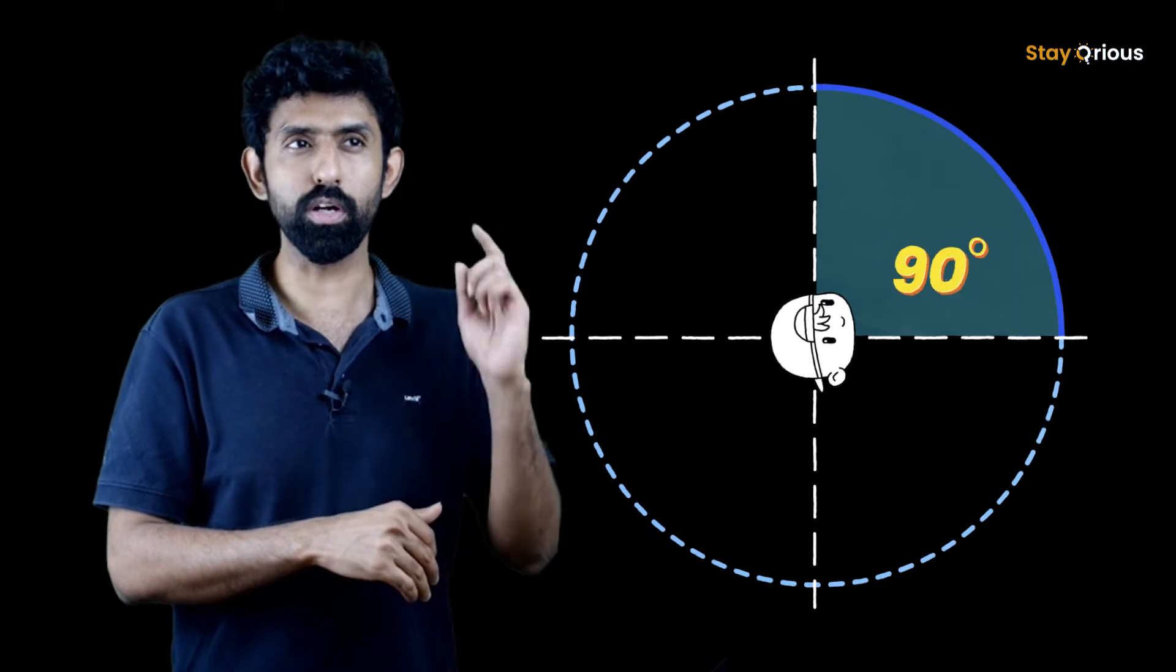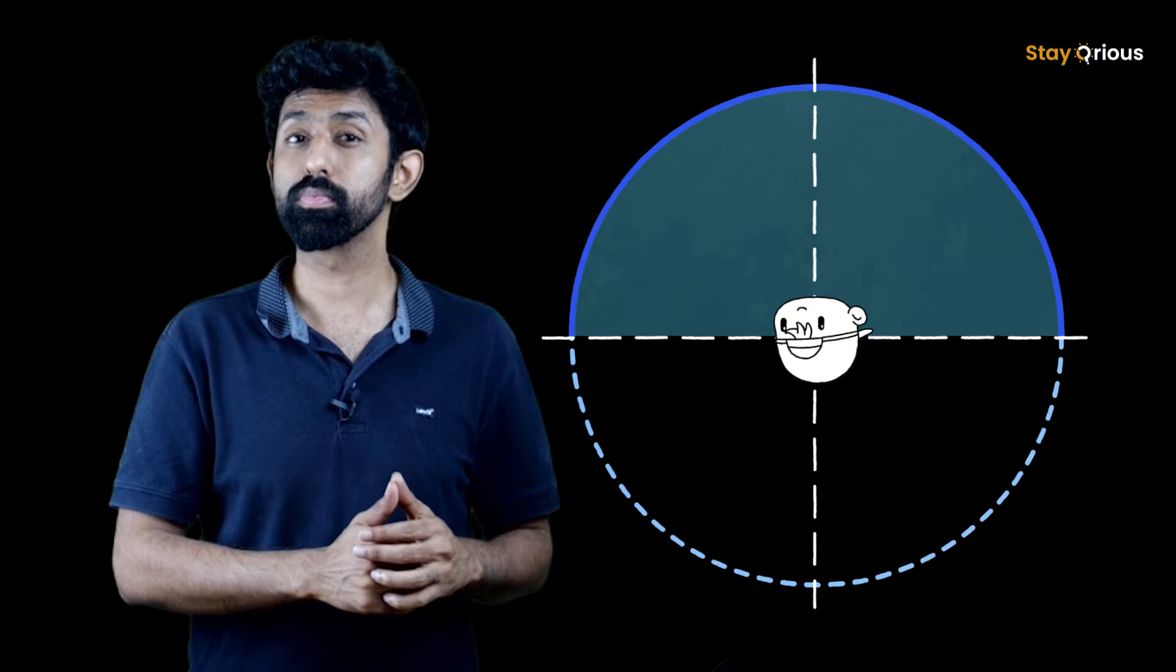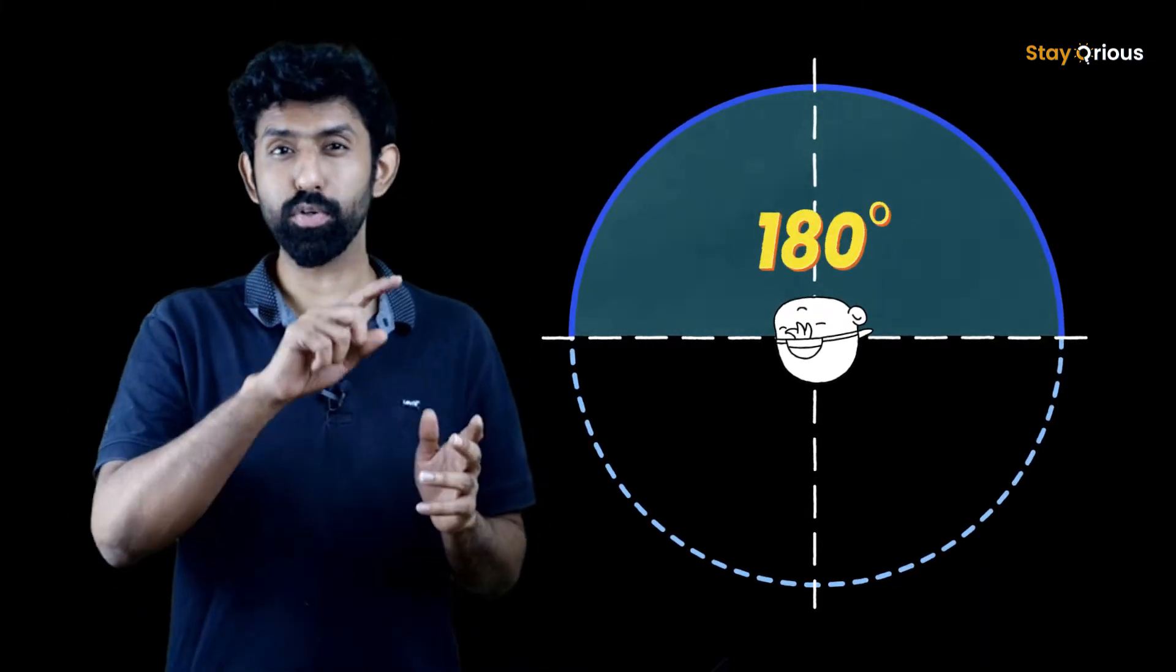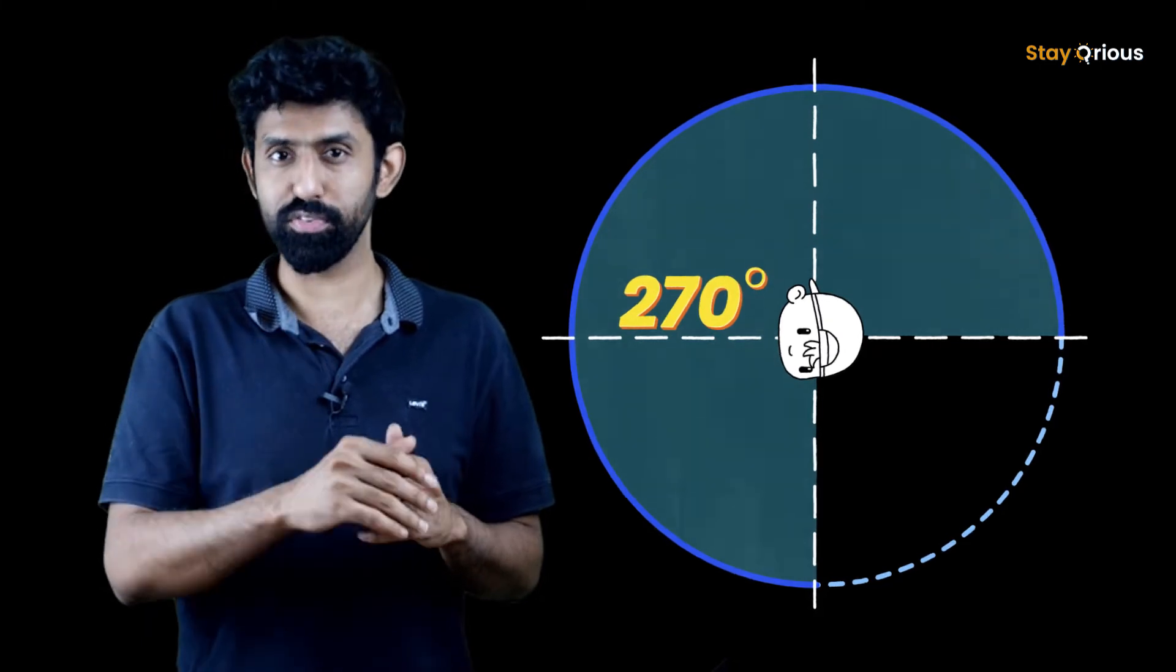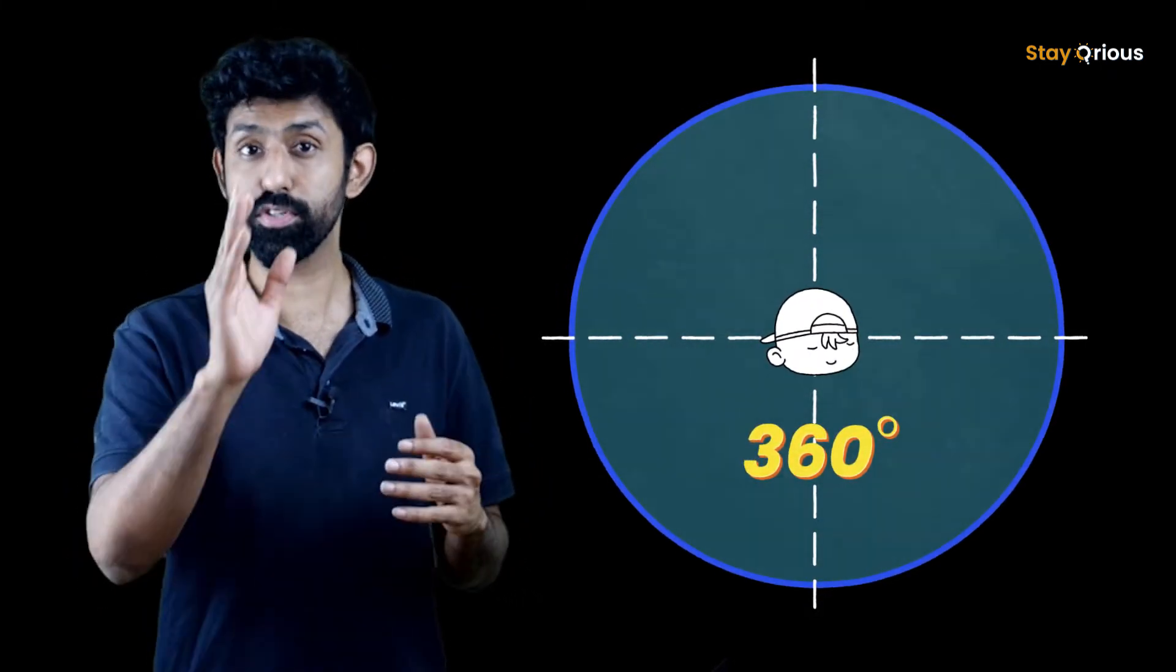Now if I ask you turn left once again, you'll do once again, how much have you turned now? That's right. 180 degrees because two times 90. Now ask you to turn once again, that's 270. Once again, that is four times 90, which is 360.